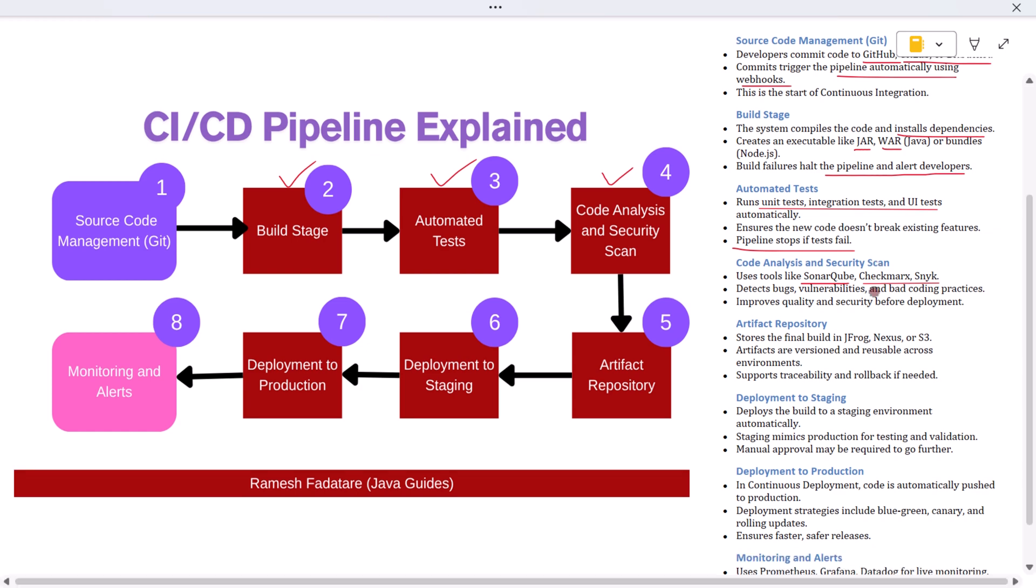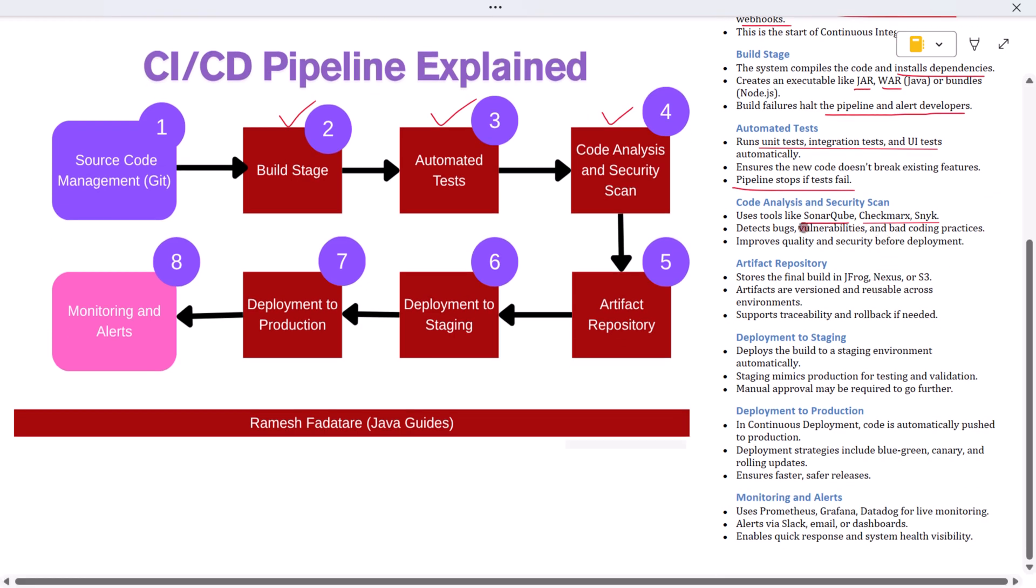By catching issues early, teams save time and avoid security breaches down the line. Once everything passes, the final build is stored in an artifact repository. This could be JFrog Artifactory, Nexus, or AWS S3. Think of it as a library of approved builds. These artifacts are versioned and can be reused across environments like dev, QA, staging, or production. This makes it easy to track which build was deployed where and roll back if needed.